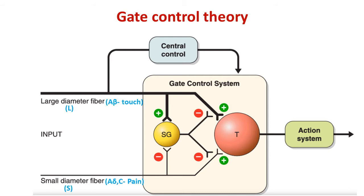In this simplified schematic diagram of the gate control theory, there are large fibers — the A-beta fiber — that carry the touch sensation, and small diameter fibers, or S fibers, that carry the pain sensation. These are the A-delta and C fibers, which end on the T cell — the pain afferent to the central nervous system.